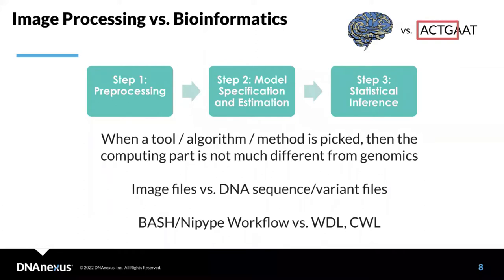When your algorithms are in place and a tool or method is picked, the computing part is not much different from genomics. There are differences in underlying data file formats — for image processing you'll work with image files, while in bioinformatics you'll work with DNA sequences and variant files. For workflow design, image processing typically uses Bash or specialized systems like Nipype, whereas bioinformatics uses WDL or CWL.